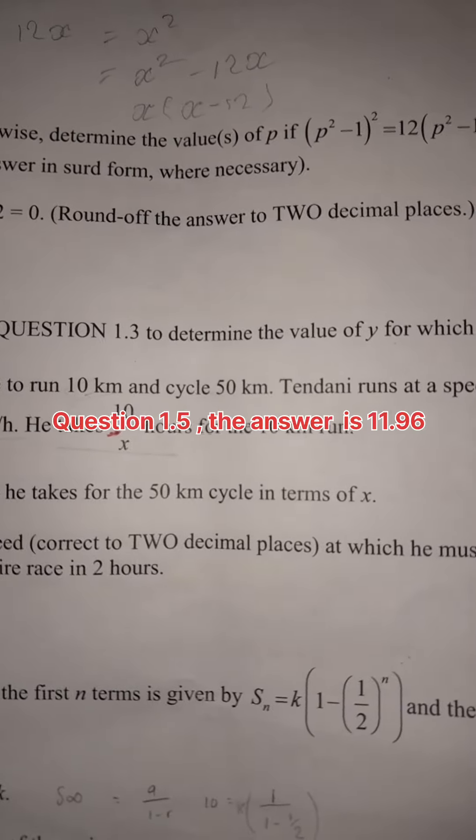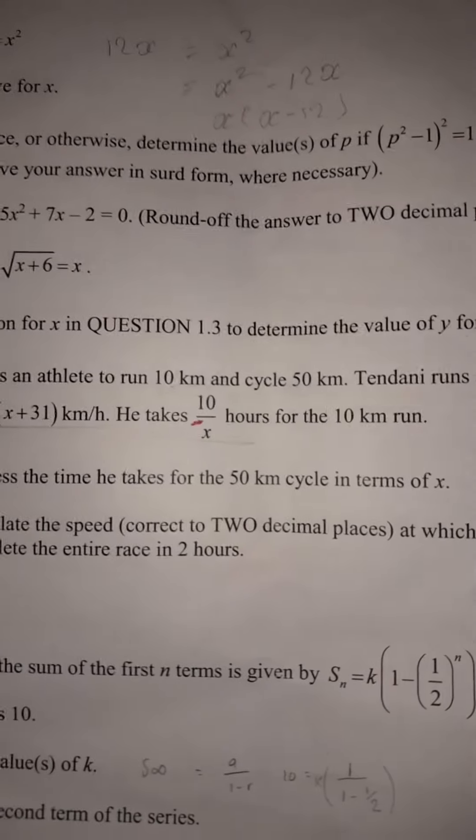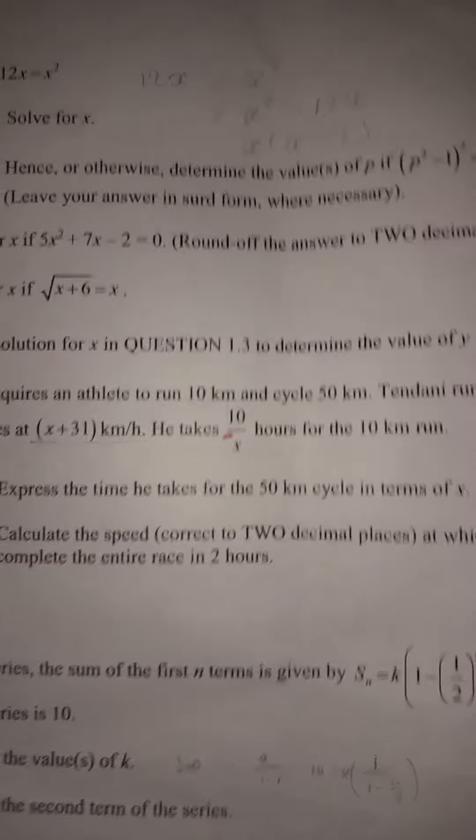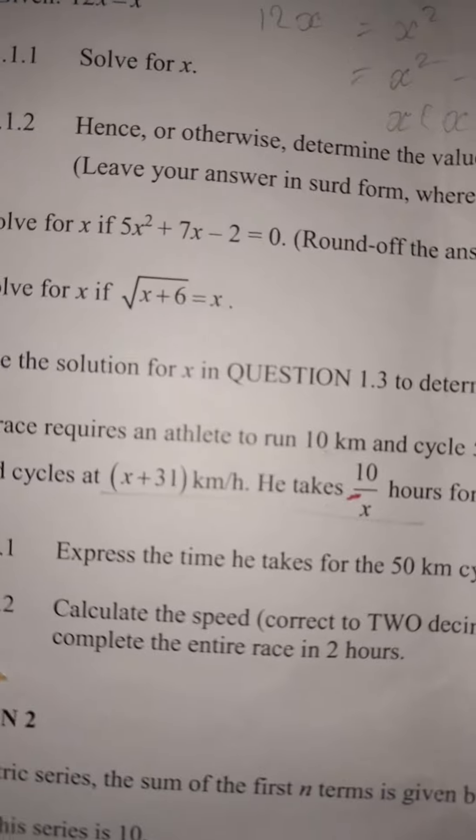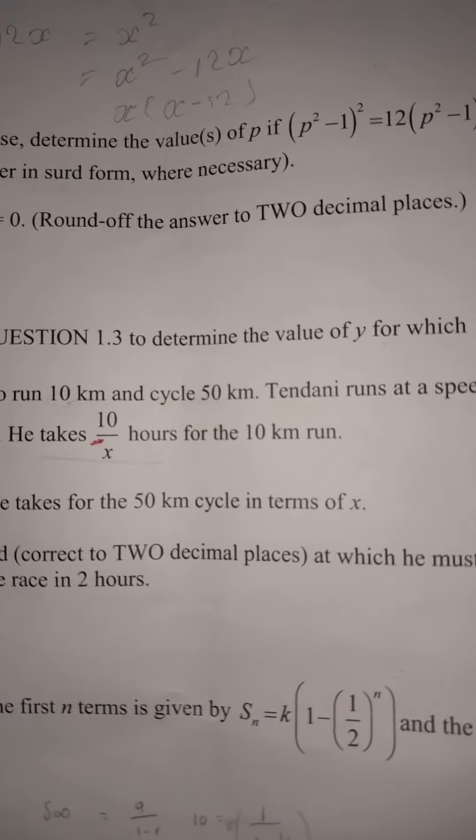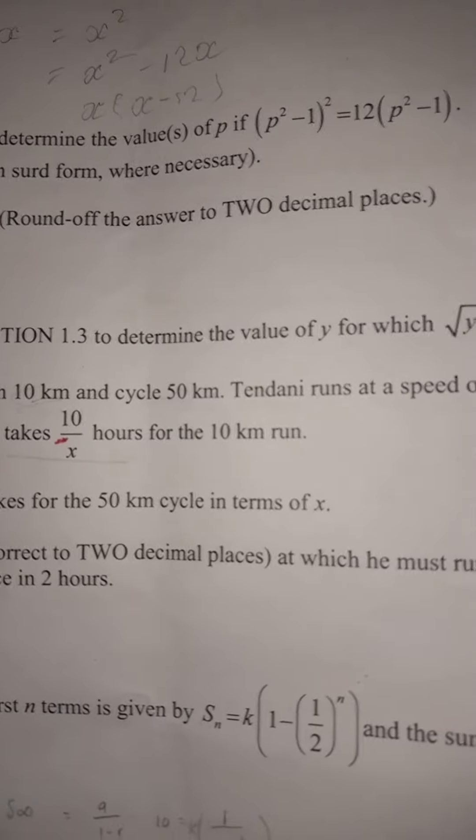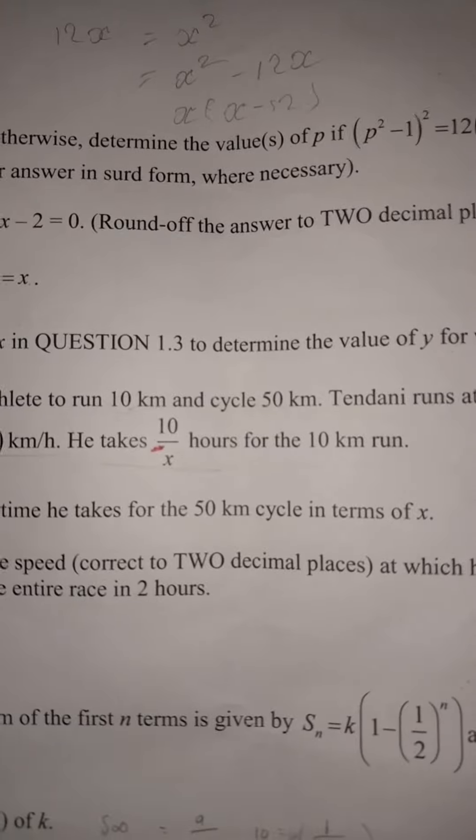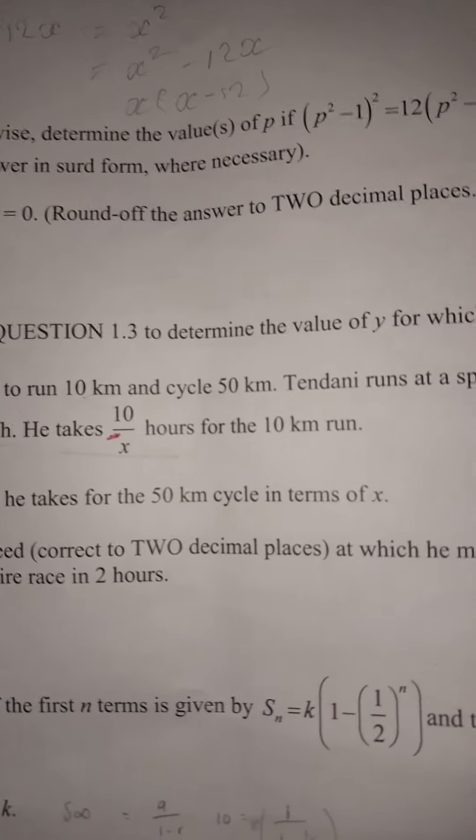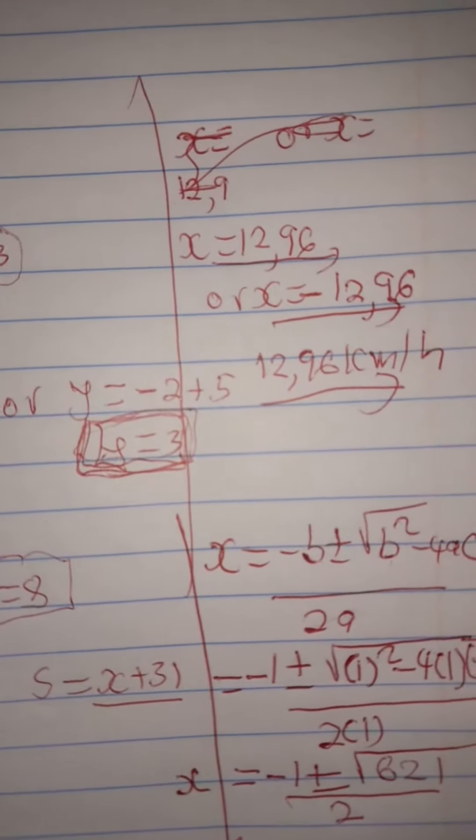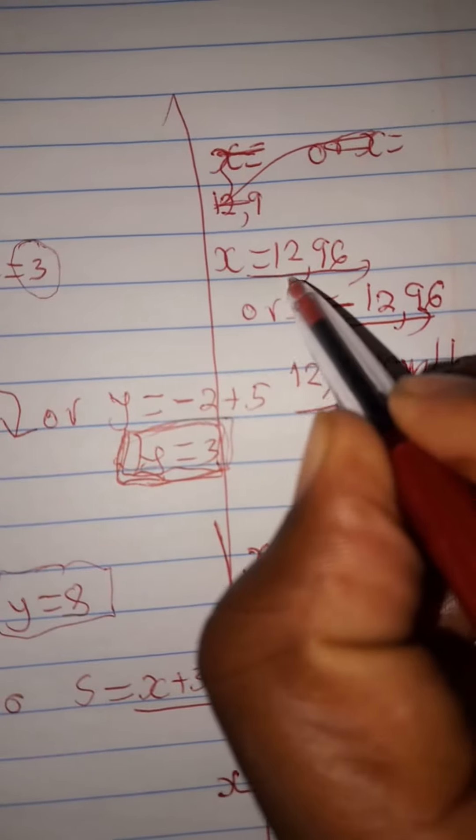Hi guys, this is Mr. Richard again. When we ended our question at 1.1.5.2, calculate the speed correct to two decimal places at which he must run to complete the entire race in two hours. I made a mistake there at 1.1.5.2, especially here.